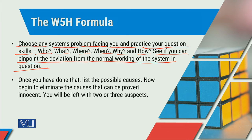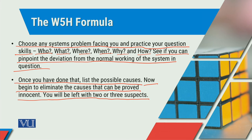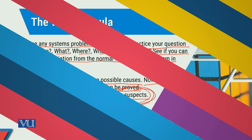The second important phenomenon is that once you have done that, list the possible causes. Us ke liye aap ko cause and effect diagram bhi banani pard sakti hai, force field analysis kerna pard sakti hai. Now begin to eliminate the causes that can be proved innocent — you will be left with two or three suspects, jo actually aap ke liye trigger points ban rahe hain, aur un trigger points ko agar aap eliminate kar lein to aap ki problem hal ho sakti hai.